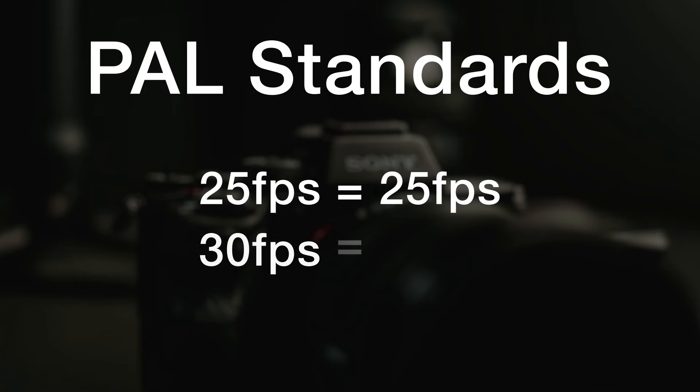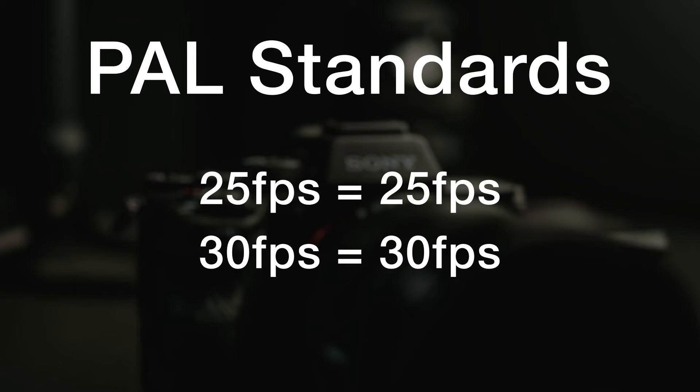If you live in Europe, you'll be using PAL standards, which is 25 frames per second and 30 frames per second — and when I say 25 and 30, I actually mean exactly 25 and 30; it's an even 25 frames and 30 frames per second. If you live somewhere outside these two regions, just do a quick Google search to find the standard for where you live.